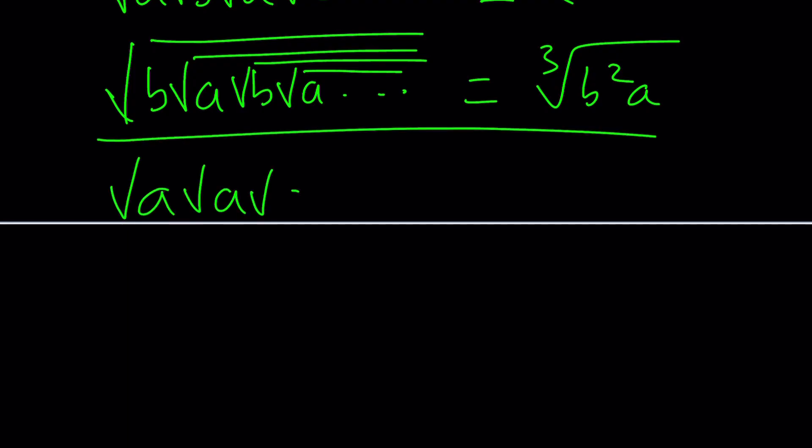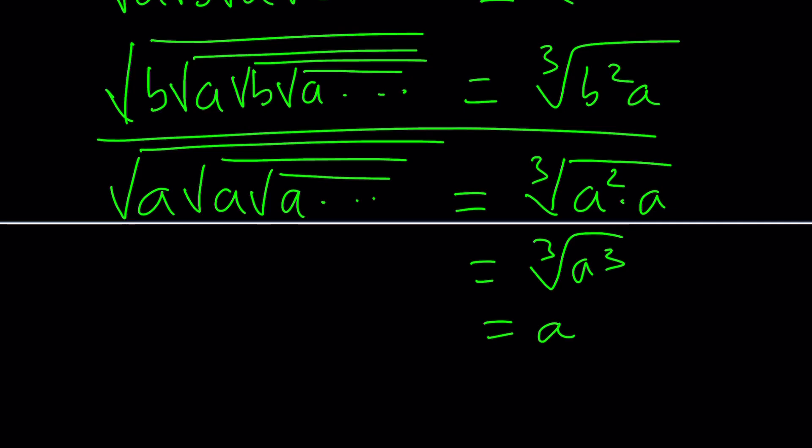So let's say you had something like this. You could even use the same formula, but you would just set a equals b. So like cube root of a squared times a, that would be the cube root of a cubed, which is a, which is the result for this type of expression. You see, this formula is very comprehensive.